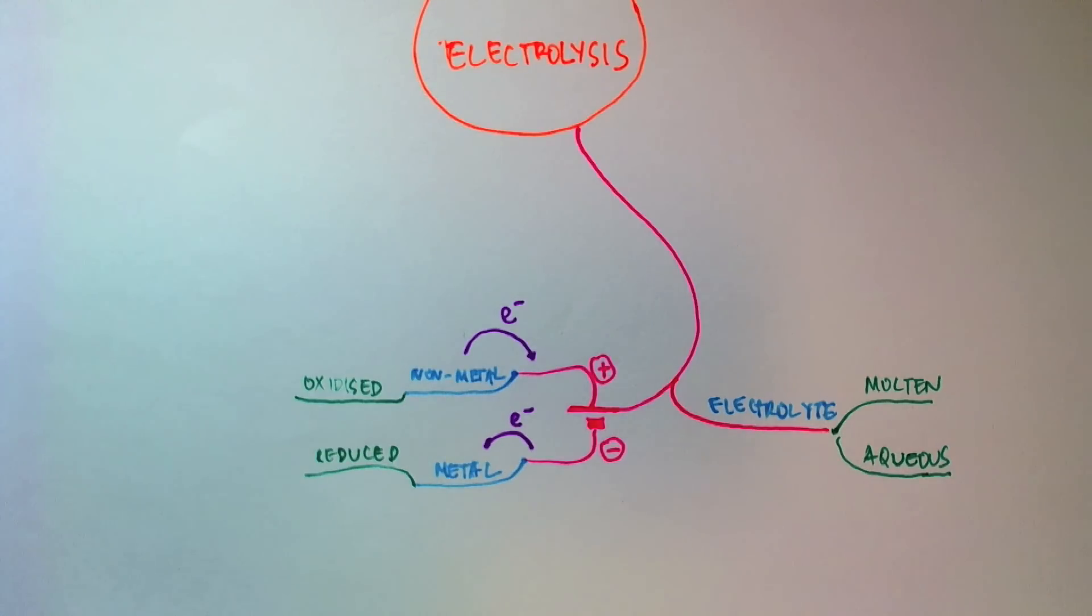And we can't have a covalent substance either, because covalent substance is uncharged, and hence it cannot carry charges. So electricity cannot flow.